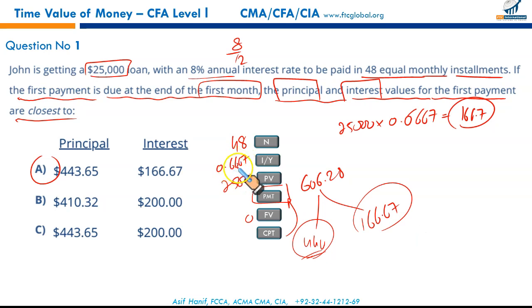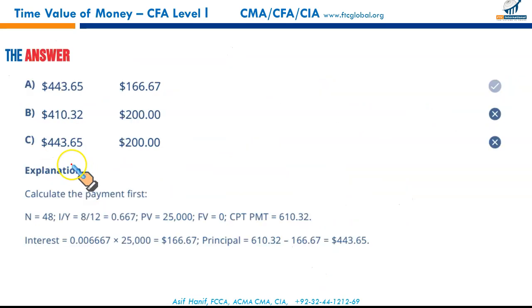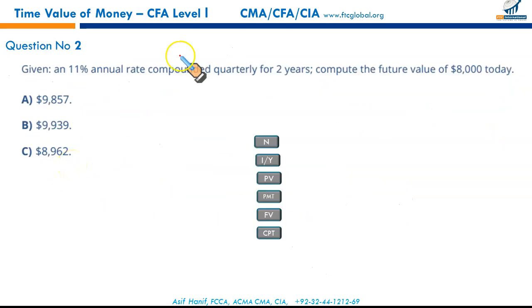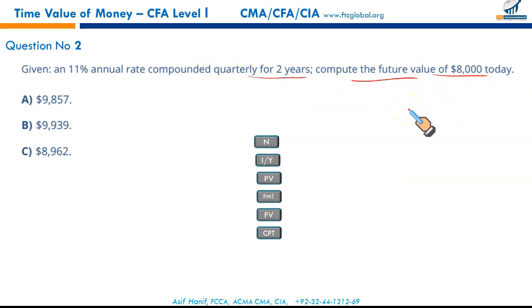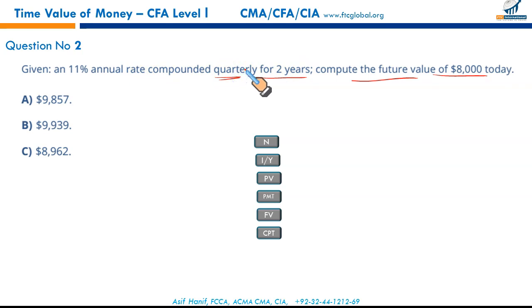Probably we used 0.66667, which is why there's a marginal $3 difference, but nonetheless we got our result. Next question: given 11% compounding quarterly for two years, compute the future value of $8,000 today. We just have to make sure we extract the information correctly and then the BA II Plus will do the rest.